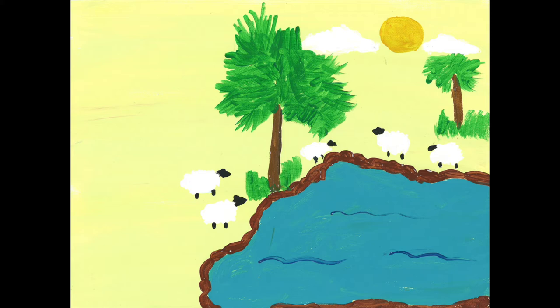But Allah the Glorious inspired her to make a wooden box, place him in it, and cast him into the river without fearing or grieving because he would surely return him to her and make him one of his messengers.